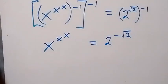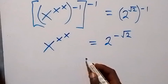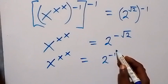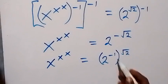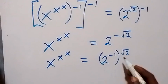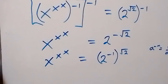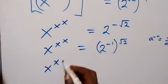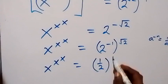In the next step, we can separate this minus together with these two, and this becomes x raised to power x raised to power x, raised to power x, equals 2 raised to power minus 1, then raised to power root 2. From the law of indices, a raised to power minus n is the same as 1 over a raised to power n. So we can write this as x raised to power x raised to power x raised to power x, equals 1 over 2, raised to power root 2.